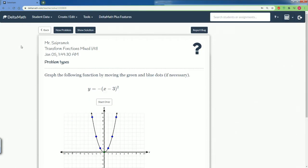Welcome, this is the Delta Math Tutorial Solution. Here we have transformation function mix A1. It says to graph the following function by moving the green and blue dots if necessary. And here is the new function, y is equal to negative (x minus 3) squared.